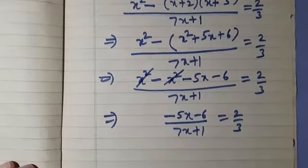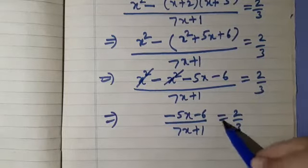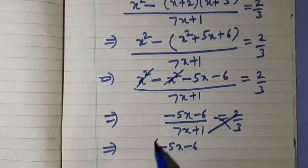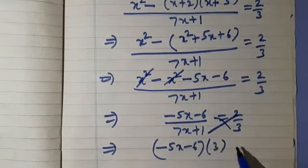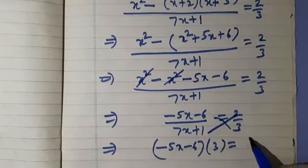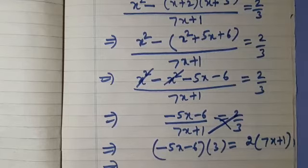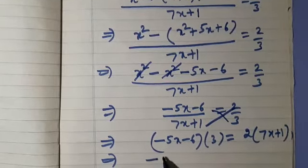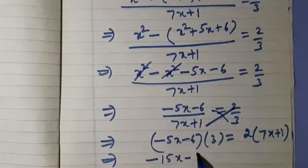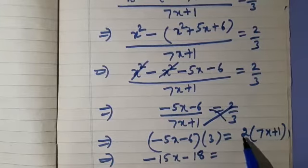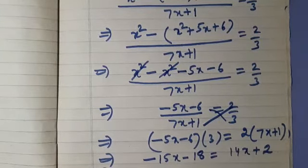Now we can simplify this by the cross multiplication method. This implies: (minus 5x minus 6) into 3 is equal to 2 into (7x plus 1). Multiplying 3 by both terms in the bracket, we get minus 15x minus 18 is equal to, doing the same on the right hand side, 14x plus 2.